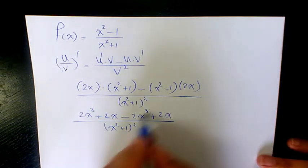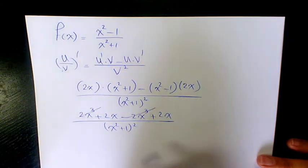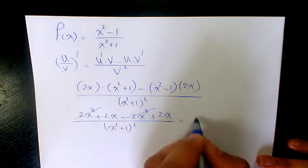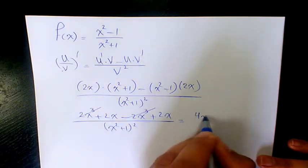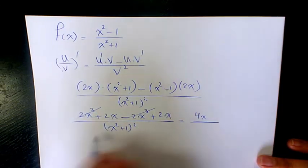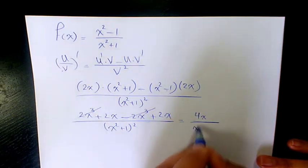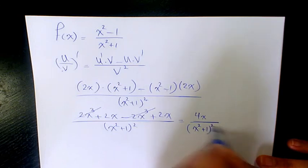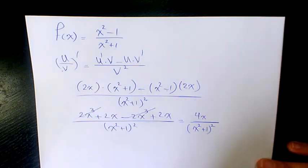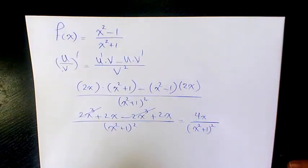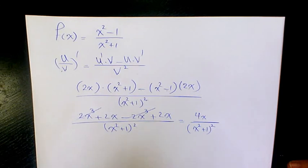Divided by x squared plus 1 to the power of 2. Then the 2x cubed terms cancel out, and we get 2x plus 2x which is 4x, divided by x squared plus 1 to the power of 2. That's going to be the final answer.